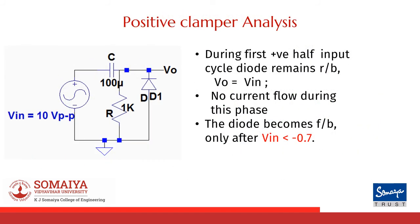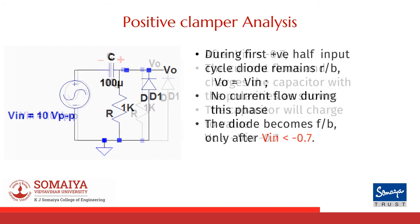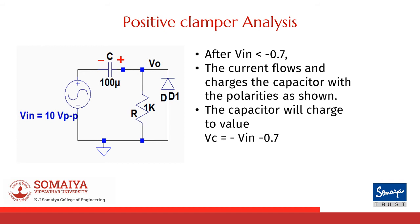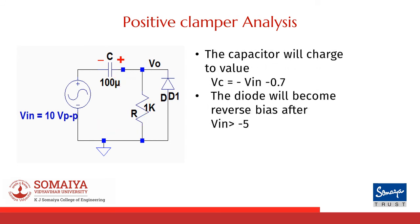If we reverse the direction of the diode, what we get is a positive clamper. During the first positive half cycle, the diode will remain reverse biased and the output will simply copy the input — no current flows during this phase. After the input voltage becomes less than minus 0.7 volts, the diode becomes forward biased. Current flows through the capacitor and diode, and the capacitor charges with the polarities as shown. The capacitor will charge to a maximum value of minus VIN minus 0.7 volts. The diode will become reverse biased after VIN has crossed the first negative peak and will remain reverse biased for the entire operation due to the design constraint.